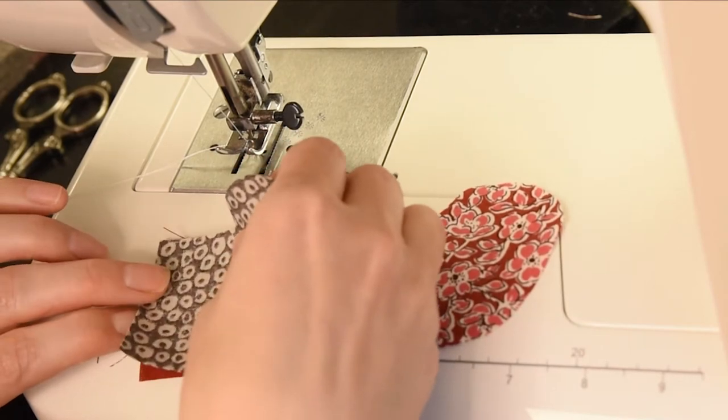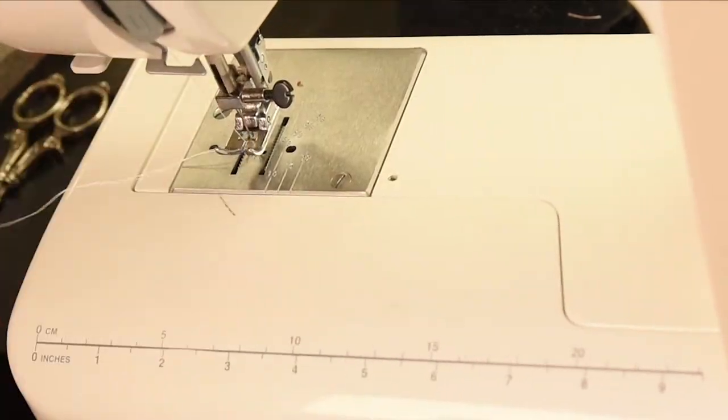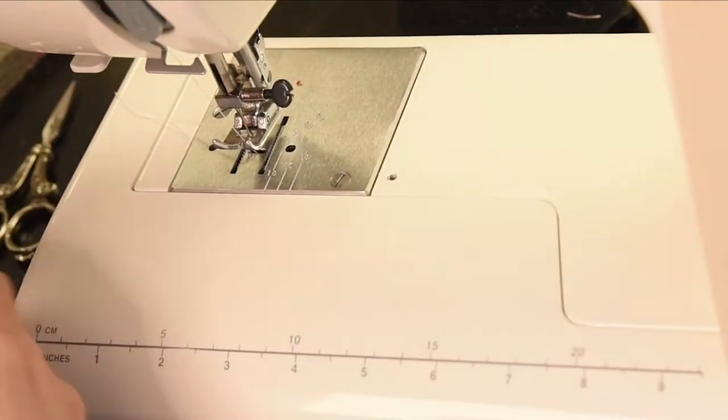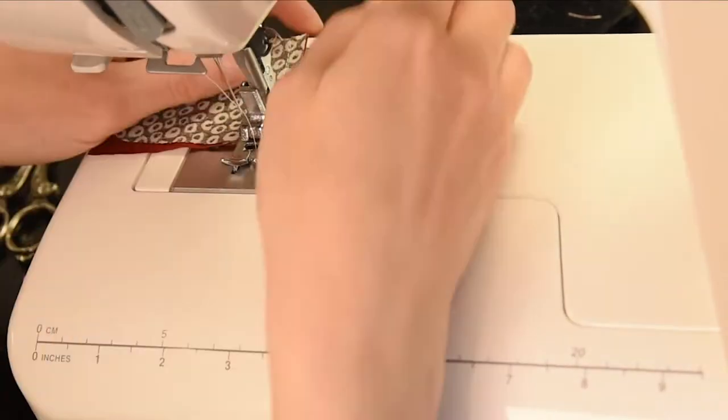We're going to add it on the other end of the cuff and again just sew like sides together. We're just going to repeat that with the other three pieces.